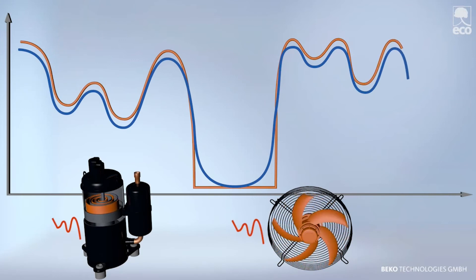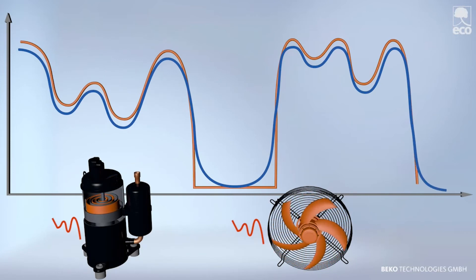As the volume flow decreases, the drying performance is also automatically reduced or switched off entirely.